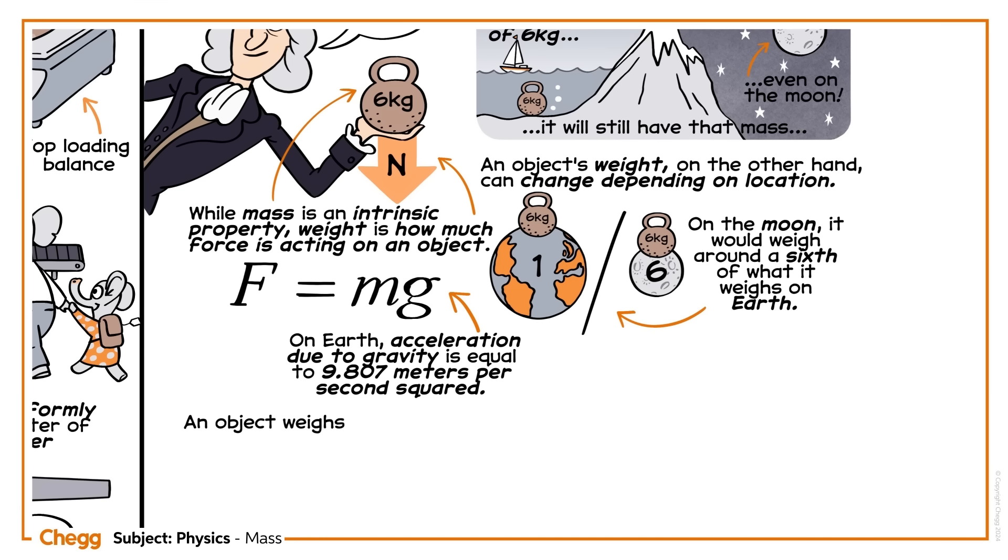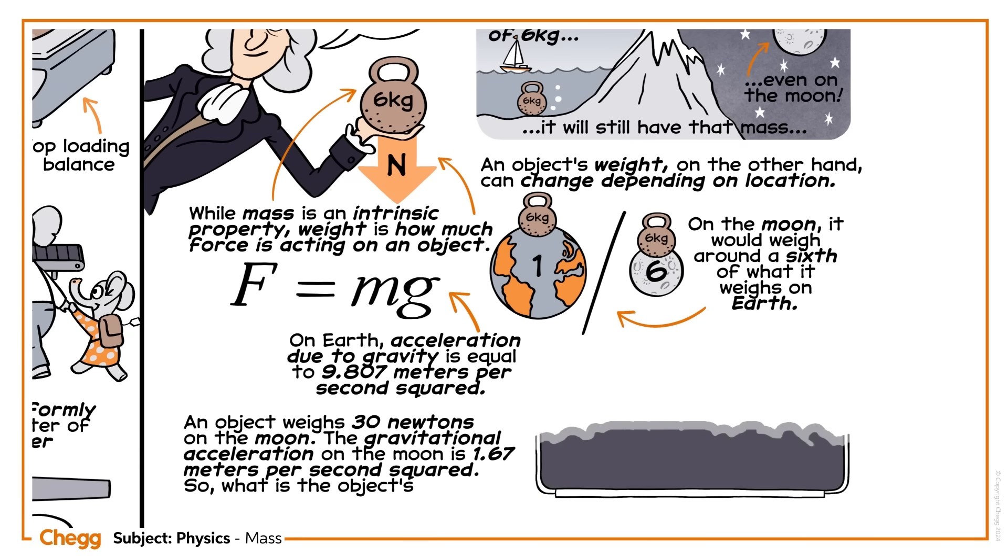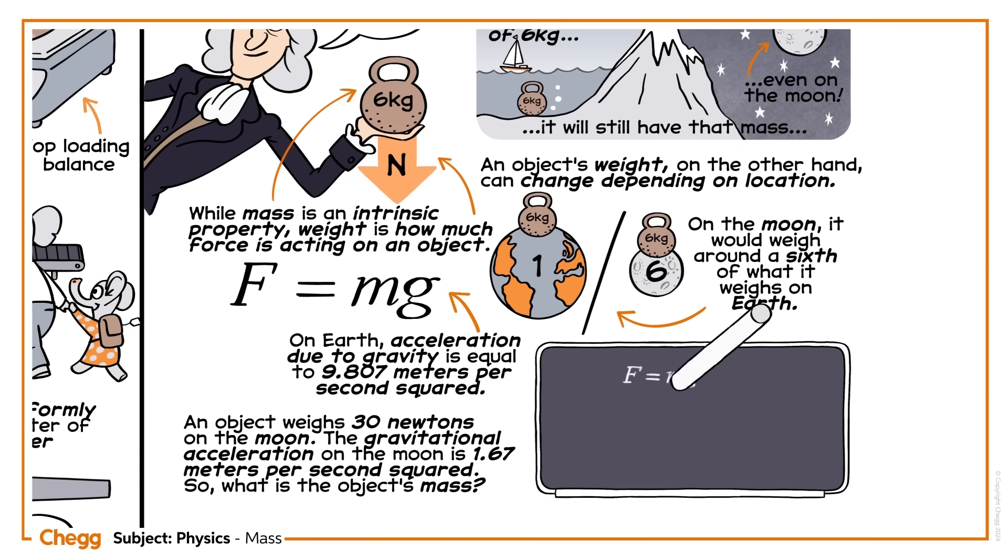Say an object weighs 30 newtons on the Moon. The gravitational acceleration on the Moon is 1.67 metres per second squared. So, what is the object's mass? If you substitute the values and solve for m, you find that the mass is 17.9 kilograms.